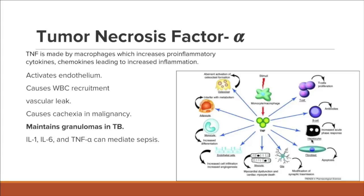When TNF-alpha binds to a receptor, it leads to an increased acute phase response, which leads to increased inflammation. That causes increased formation of C-reactive protein, a marker of inflammation in the body. CRP can be detected in the serum, and you can test for it in patients with inflammatory conditions. TNF-alpha also binds to B cells, leading to formation of antibodies, and to T cells, causing more T cell proliferation, which can eventually lead to inflammation.